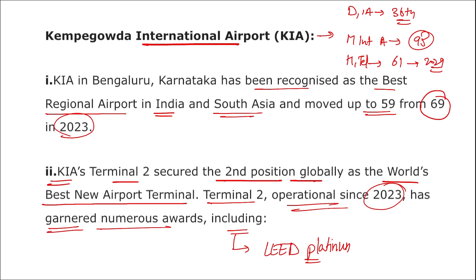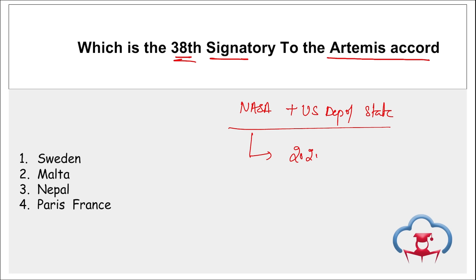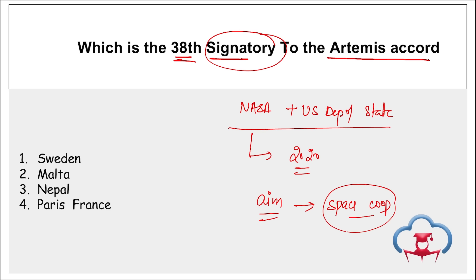Which country is the 38th signatory to the Artemis Accord? The Artemis Accord was jointly launched by NASA (National Aeronautics and Space Administration) and the US Department of State in 2020. The aim is to enhance bilateral and multilateral space cooperation between signatory countries. There were 37 signatories, and now there are 38 — Sweden has recently become the 38th signatory to the Artemis Accord.